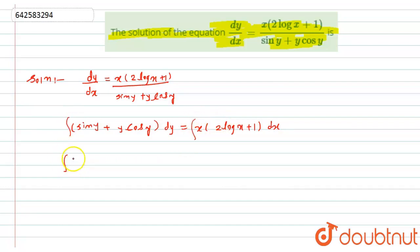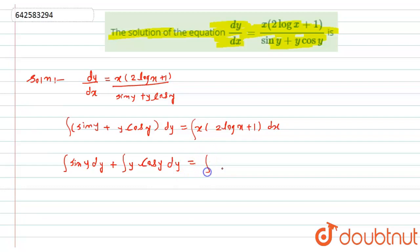Now I will integrate both sides. Separating the integration: integration of sin(y) dy plus integration of y·cos(y) dy equals integration of 2x·log(x) dx plus integration of x dx.